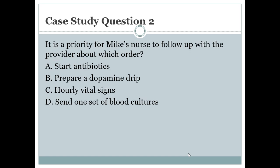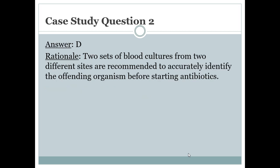Case study question 2: it is a priority for Mike's nurse to follow up with the provider about which order — start antibiotics, prepare dopamine drip, hourly vital signs, or send one set of blood cultures? The answer is D. Two sets of blood cultures from two different sites are recommended to accurately identify the organism before starting antibiotics — one anaerobic and one aerobic bottle set from two different sites.